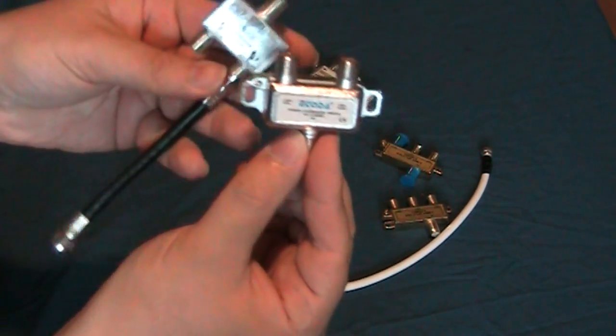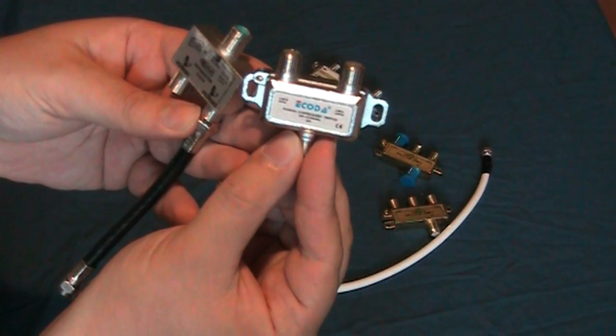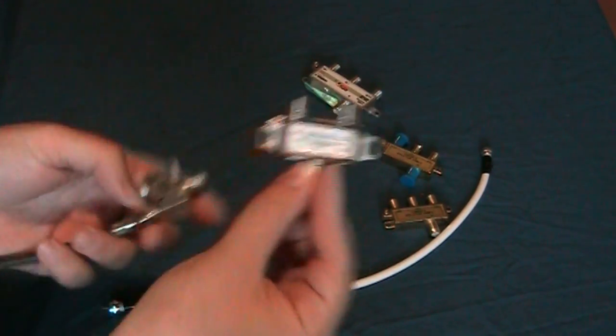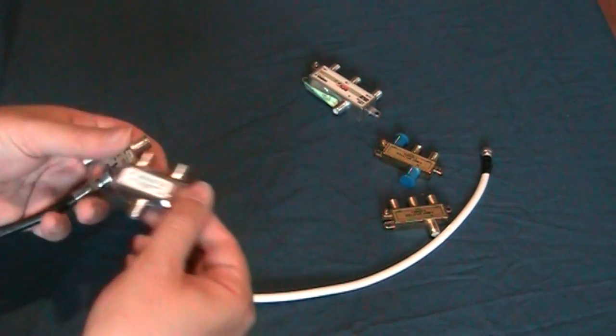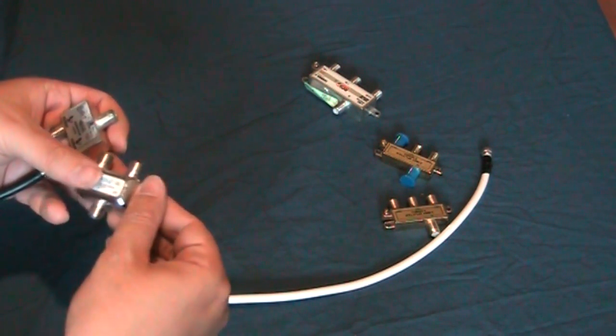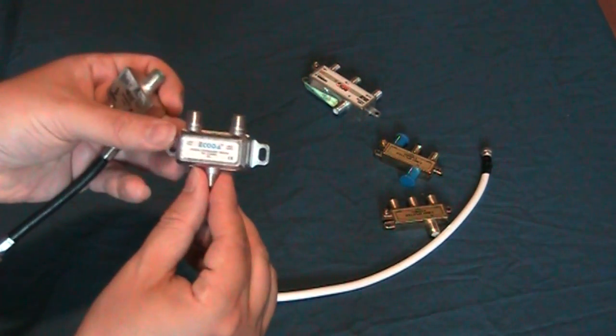These are two different simple 22k switches, not DiSEqC switches. Then there's also DiSEqC switches that will do multiple - you can run to multiple lines, two different LNBs or satellites.